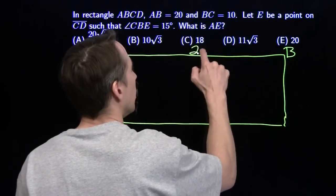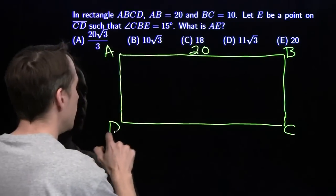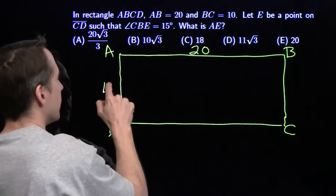That's the long side. Length is 20, then C, D. And our short side has length 10.